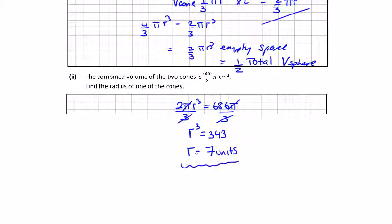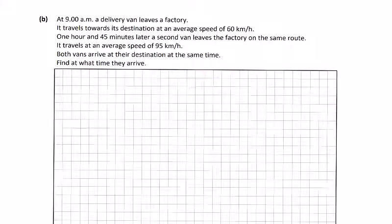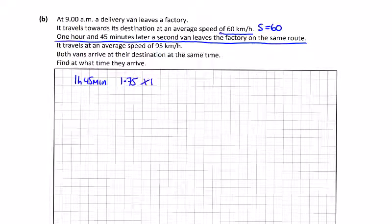For part b, at 9 a.m. a delivery van leaves the factory, travels towards the destination at an average speed of 60 kilometers per hour. And one hour 45 minutes later, 1.75 hours, a second van leaves the factory. The other guy's gone at 60 kilometers an hour, so how far has he gone? 60 by 1.75 is 105 kilometers. So that's how far he's gone.